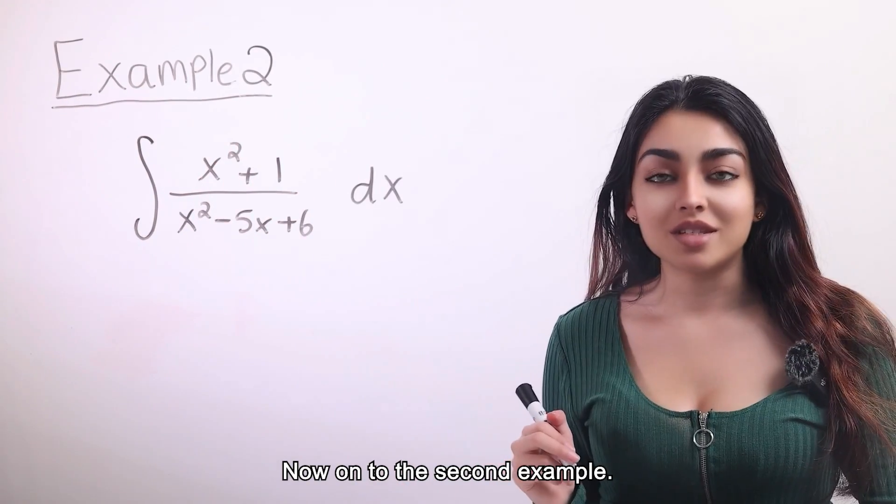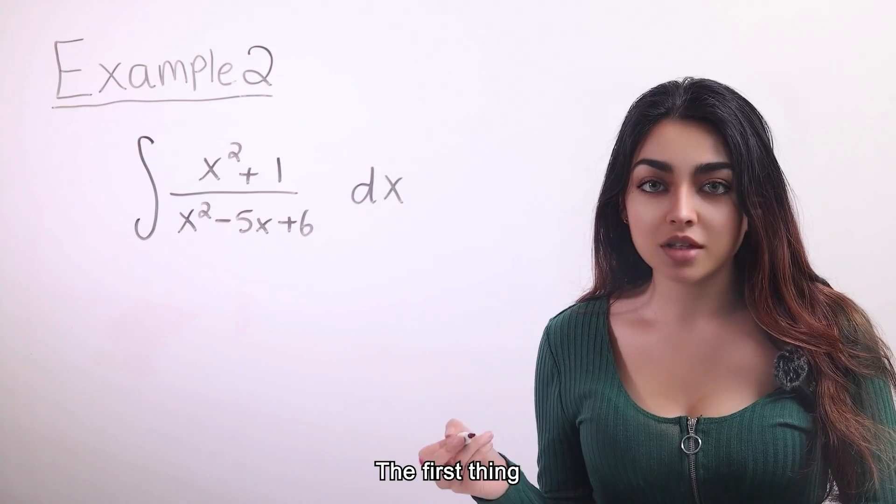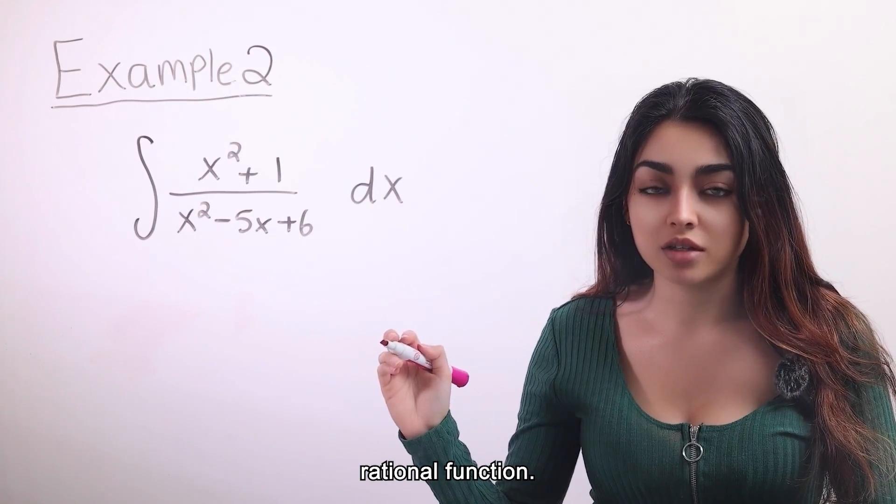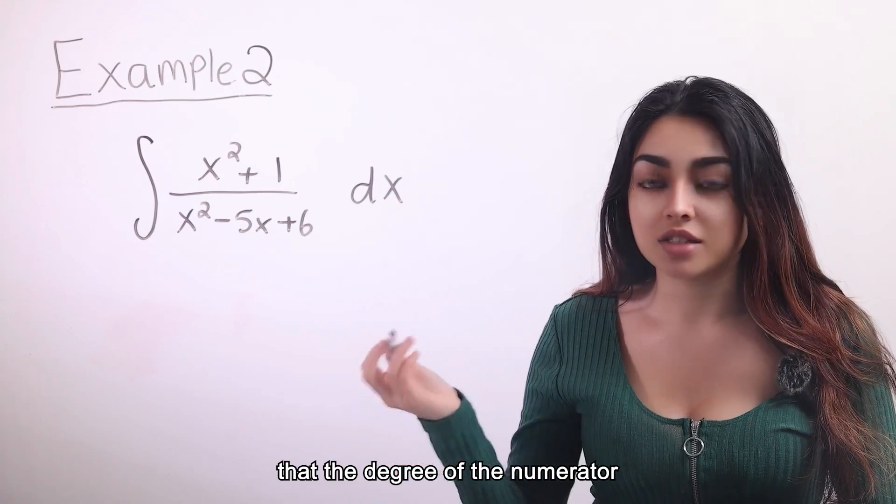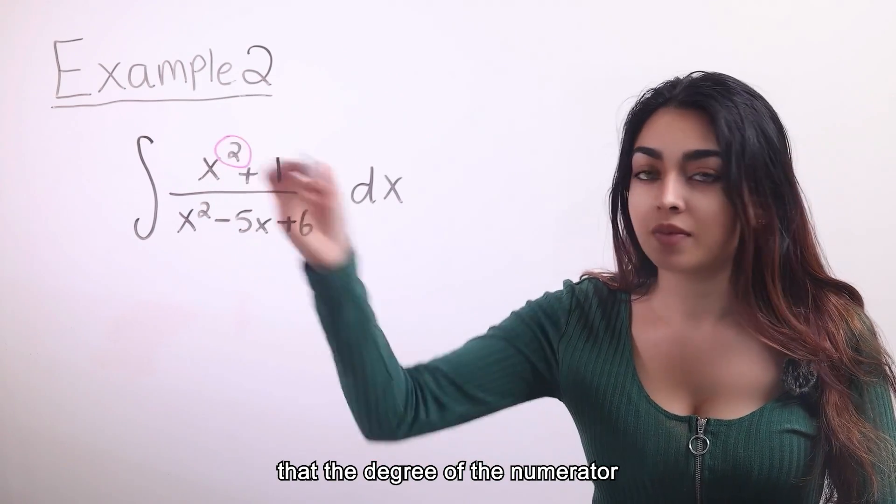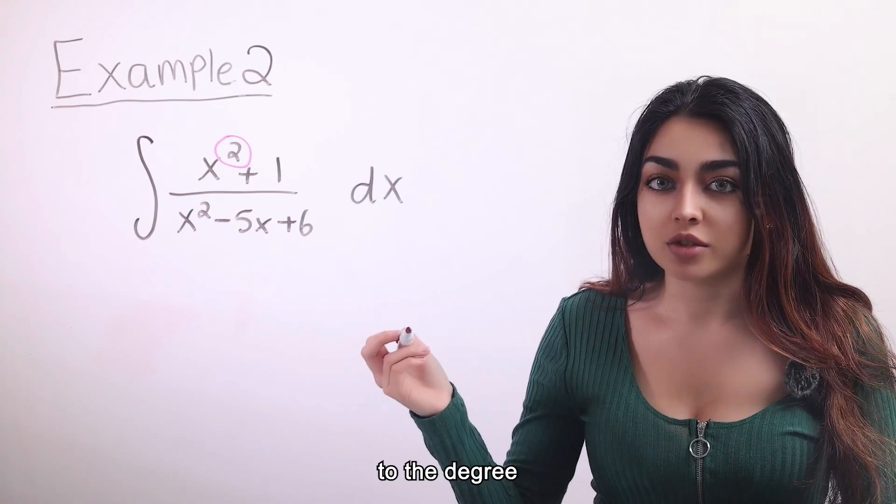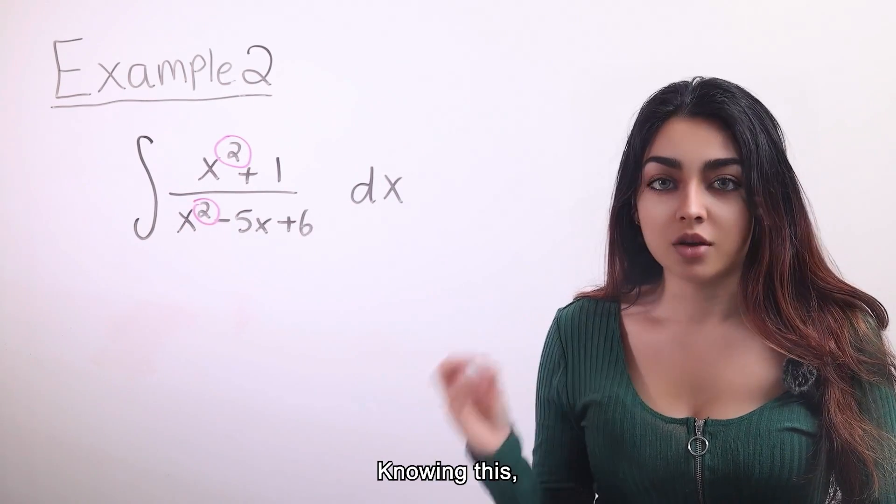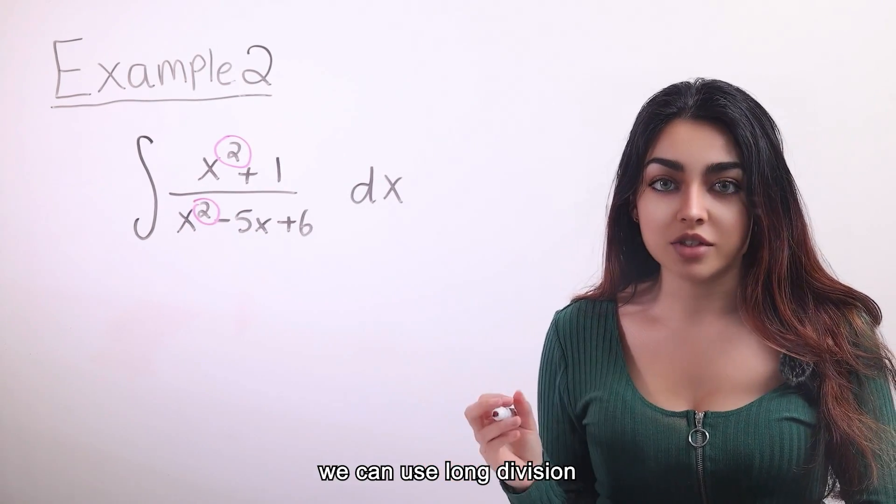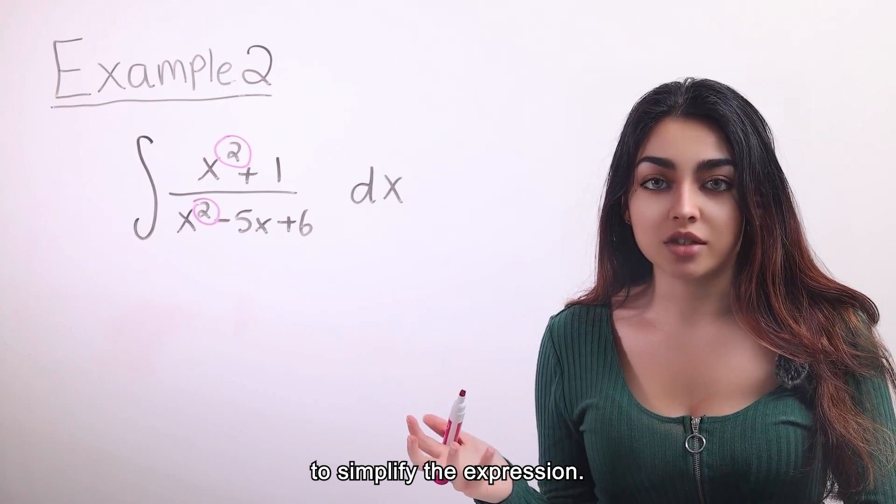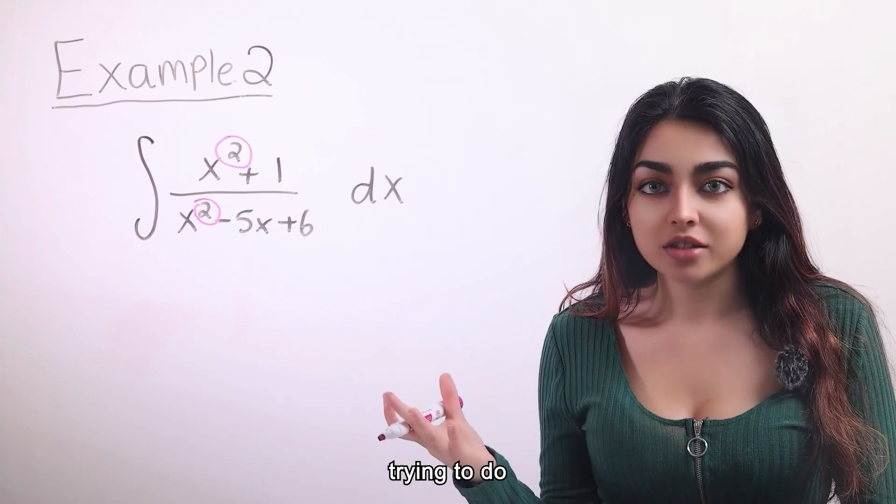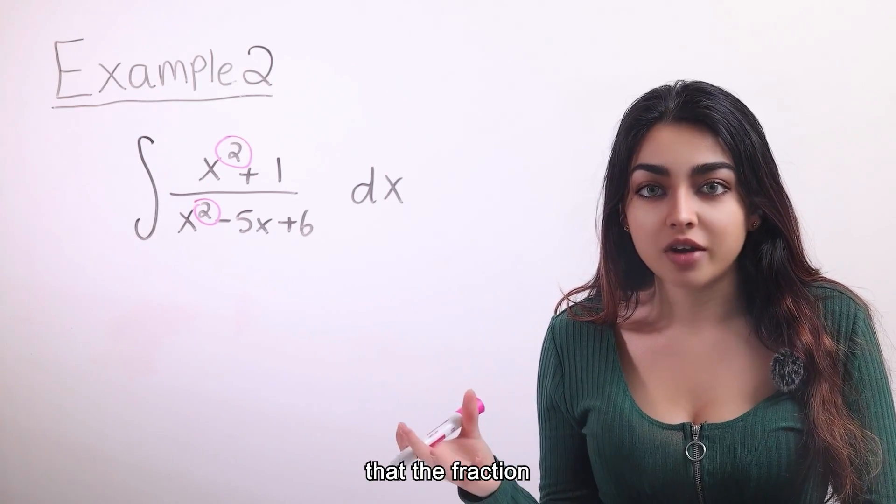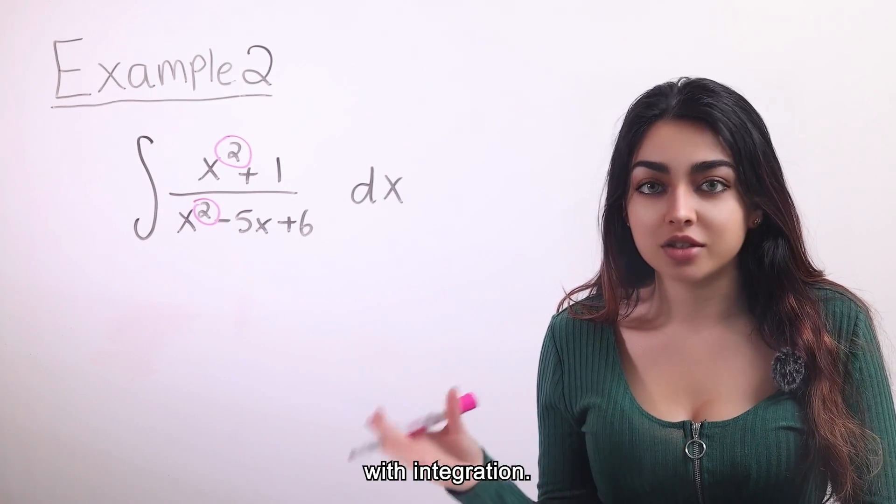Now on to the second example. The first thing we can notice about this function is that it is an improper rational function. This just means that the degree of the numerator is greater than or equal to the degree of the denominator. Knowing this, we can use long division to simplify the expression. Essentially, what we are trying to do is that we want to split the numerator into two parts with the hope that the fraction will be simplified with integration.